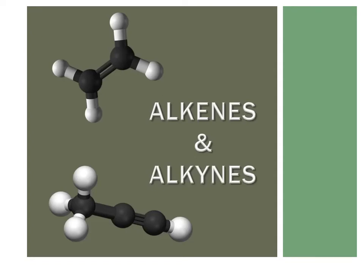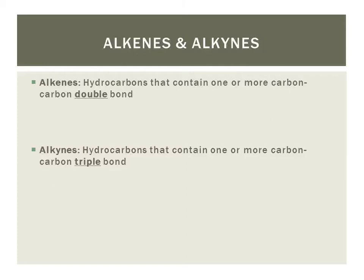In this lesson, we're going to learn how to name and draw alkenes and alkynes. Alkenes and alkynes are both unsaturated hydrocarbons, which means they are not bonded to the maximum number of atoms and they contain multiple bonds. Alkenes are hydrocarbons that contain one or more double bonds, whereas alkynes are hydrocarbons that contain one or more triple bonds.